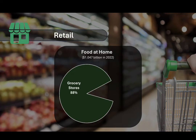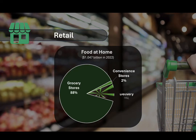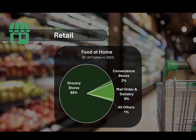Convenience stores are smaller stores that offer a limited selection of food products, usually focusing on snacks, beverages, and ready-to-eat items. They account for a small but growing share of food purchases, estimated to be about 2 percent of all consumption. E-commerce platforms that sell food products online — including large online grocery stores and subscription meal kits — are a growing segment of the food at home market, representing a little less than 10 percent of all food at home. This segment picked up significantly after the COVID-19 lockdowns. All other sources represent about 1 percent of food consumed at home.